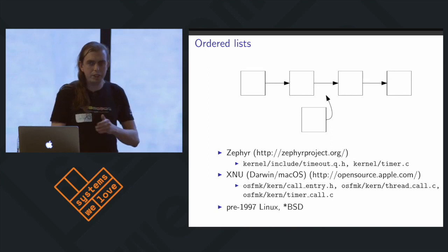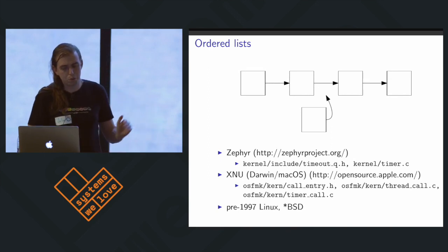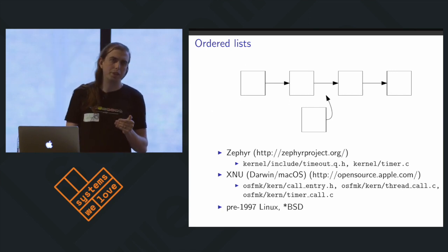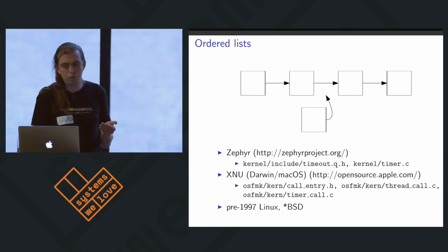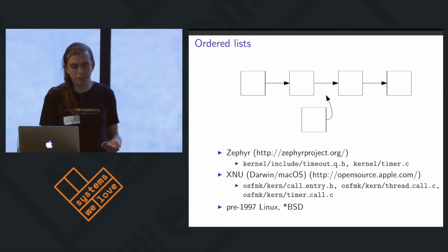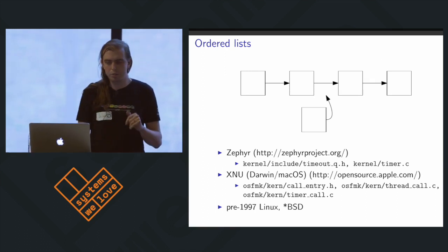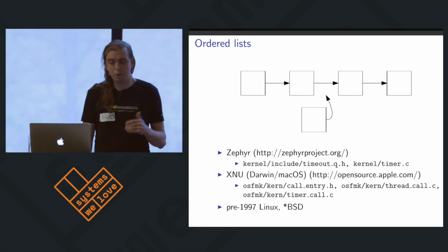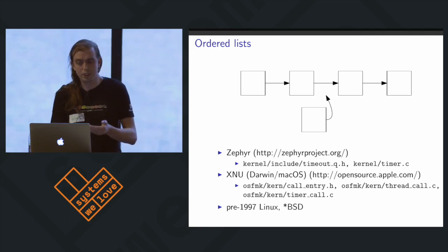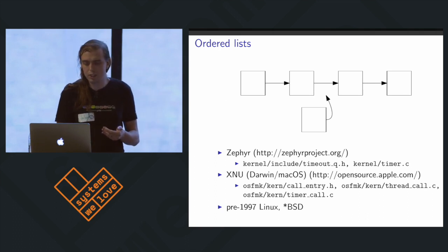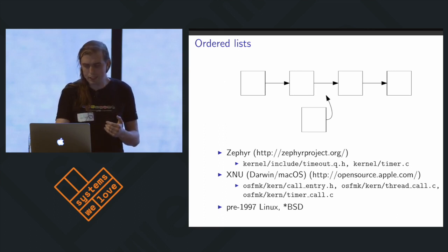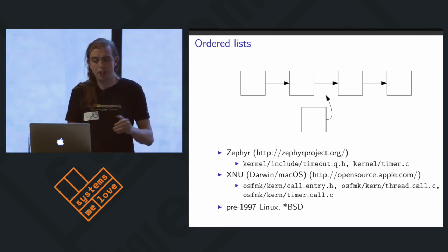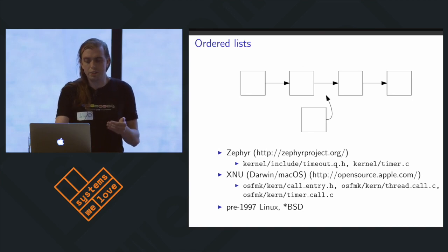The next most obvious thing is to sort those lists — to insert in sorted order when we add a timer. It turns out that for small scale this is not too bad, and there are lots of real systems that do this. The most surprising one for me was Darwin: the XMU kernel does this and doesn't seem to have any other facility for call-outs using any other structure. But clearly this is going to be linear time for adding timers, and we're going to need to add a lot of timers.